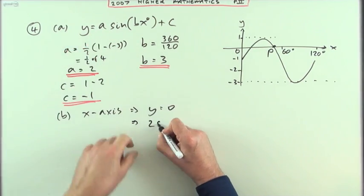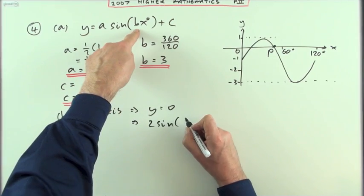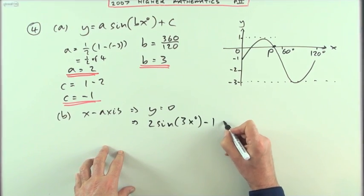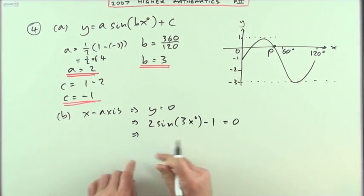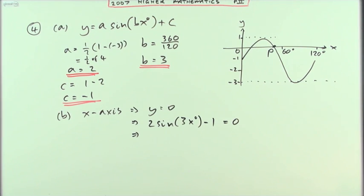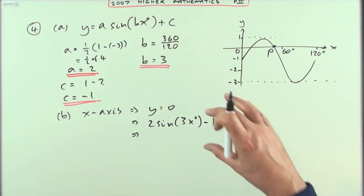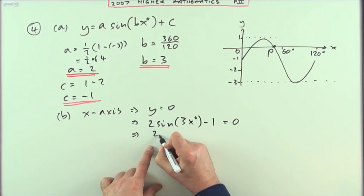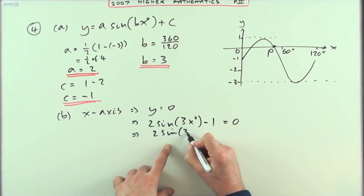That means this expression, which was 2 sin 3x-degrees minus 1 should equal 0. There's only one mention of x, so it's just get rid of all the bits and pieces. Get rid of the 1, get rid of the 2, get rid of the sin, get rid of the 3. You just dig your way down through them until eventually you've got x.